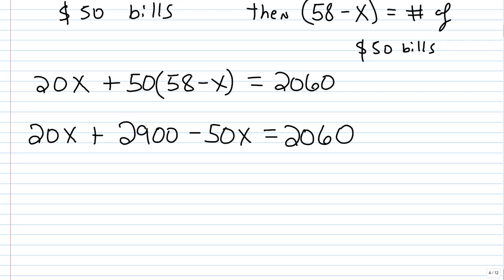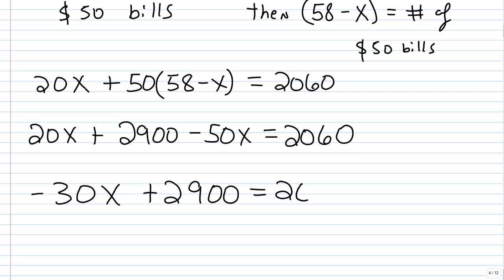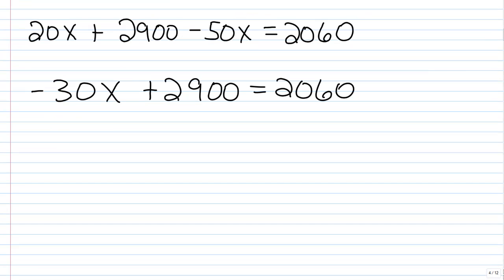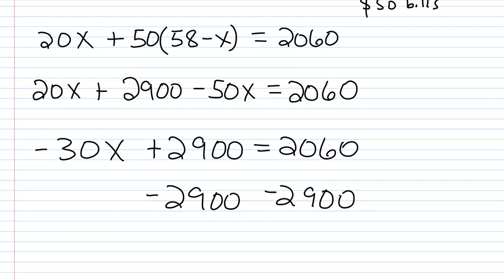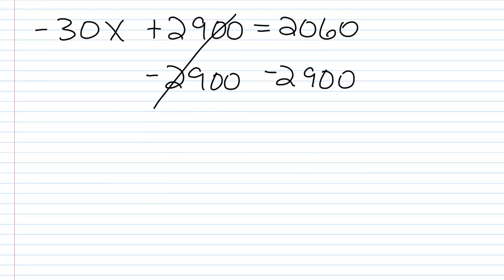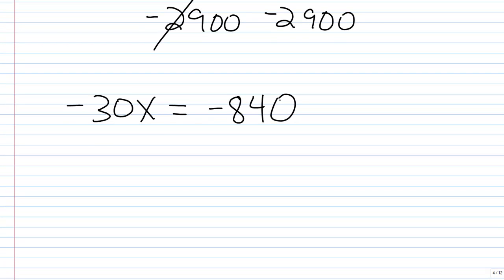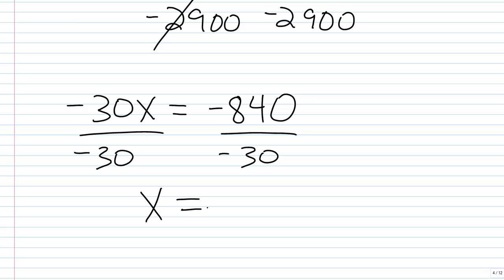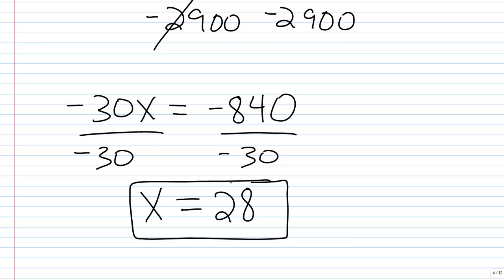Combining like terms: negative 30X plus 2,900 equals 2,060. Subtracting 2,900 from both sides gives negative 30X equals negative 840. Dividing both sides by negative 30, we get X equals 28.